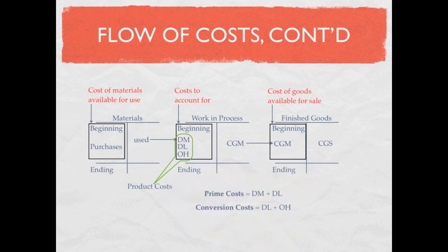Conversion costs are your direct labor plus your overhead. They're called conversion costs because it takes direct labor and overhead to convert direct materials into a finished good.